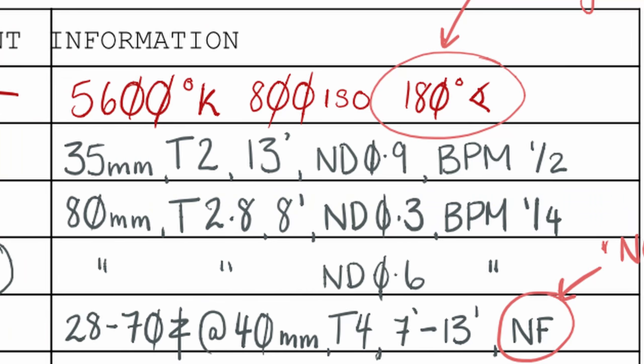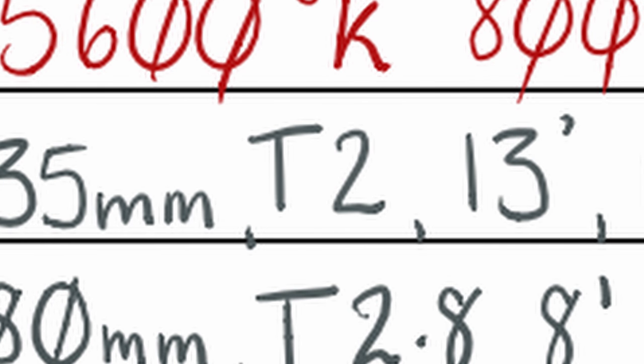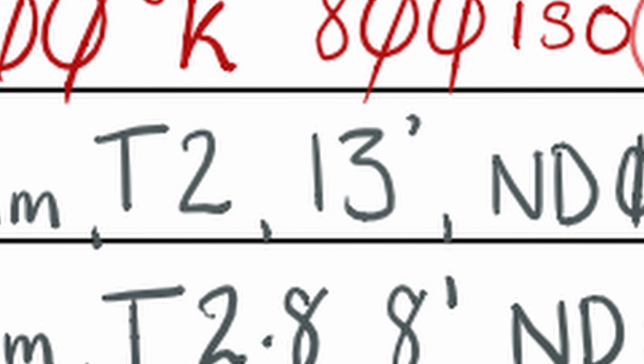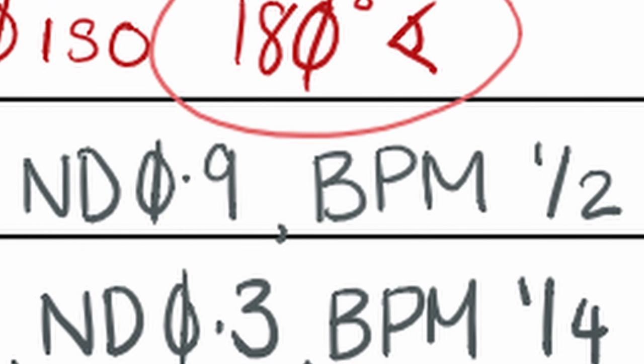I came up with a way to remember what information to put in the camera settings column — LIFF: Lens, Iris, Focus, Filters. So in my example, we've got a lens that's 35 millimetres at T2, which is your aperture and iris, then 13 foot which denotes how far away the action is — the focal distance. And then after that you've got the filters: ND filters, PROMIST in my example, but it could be anything.